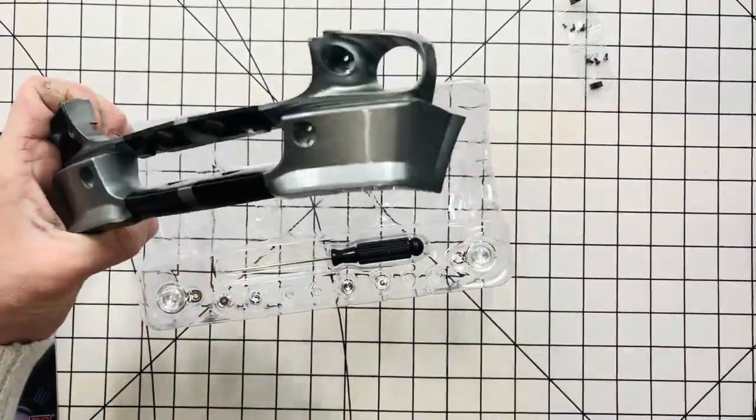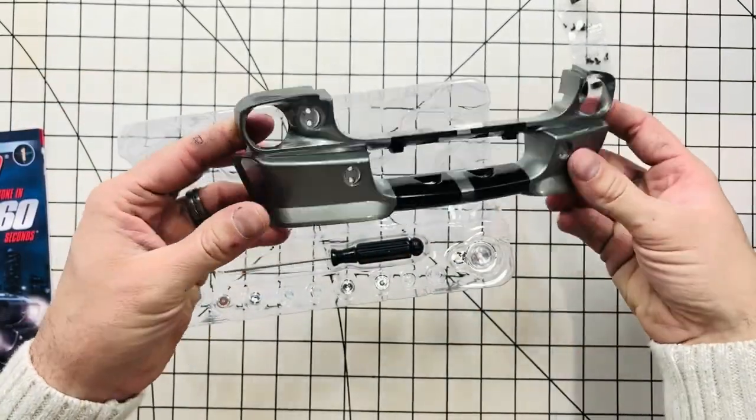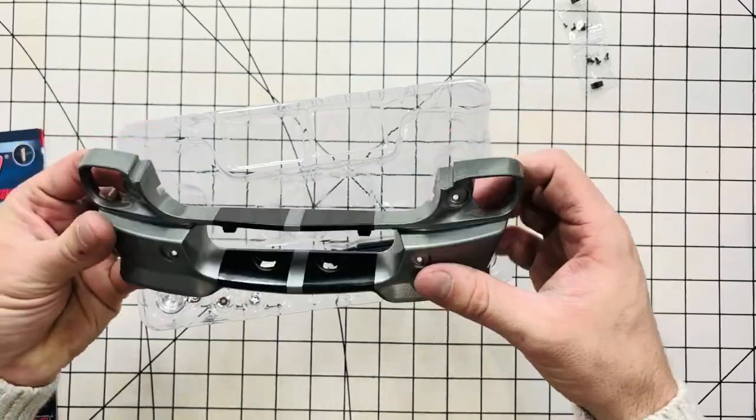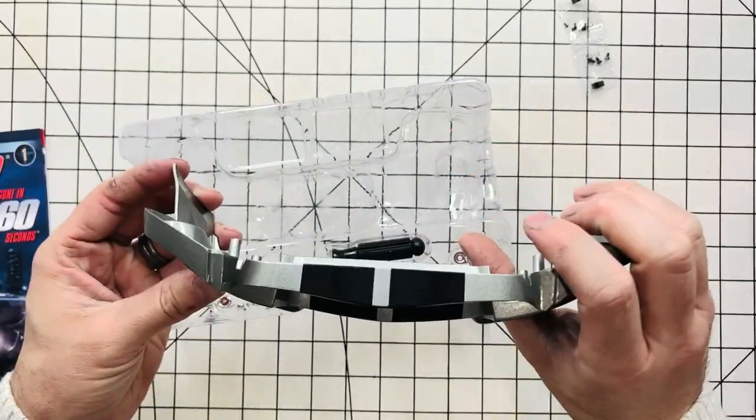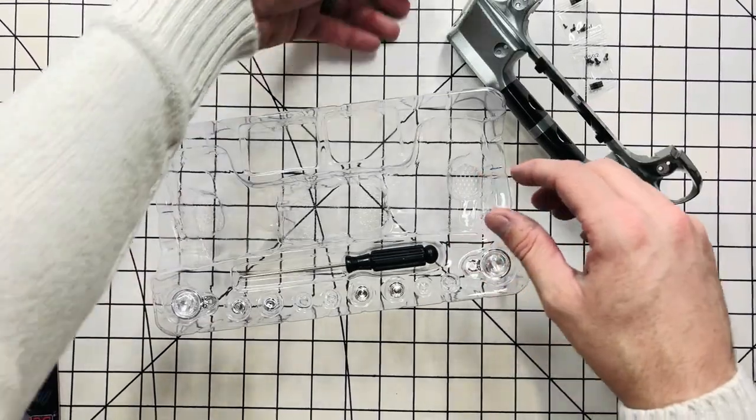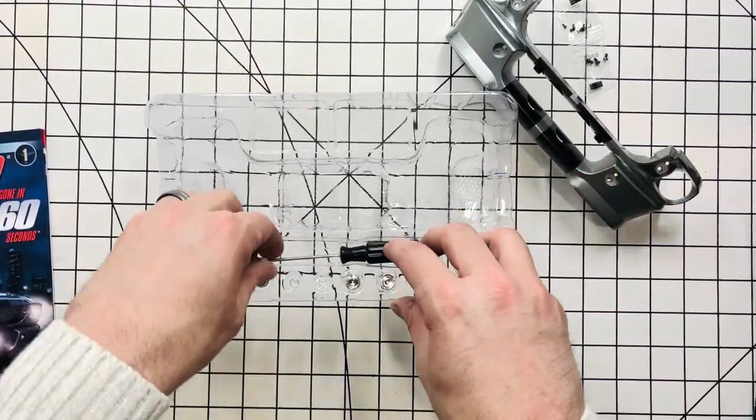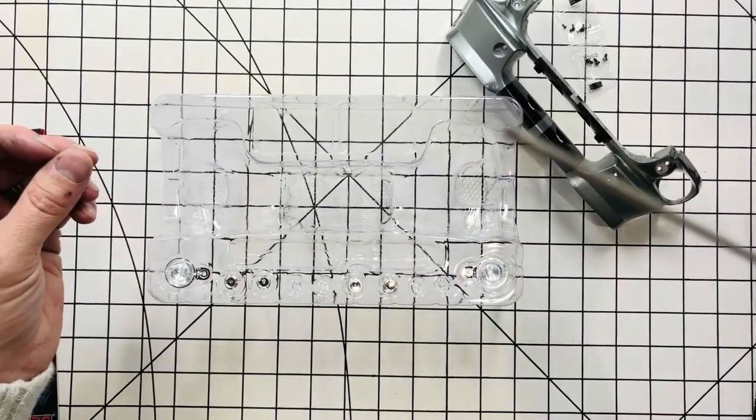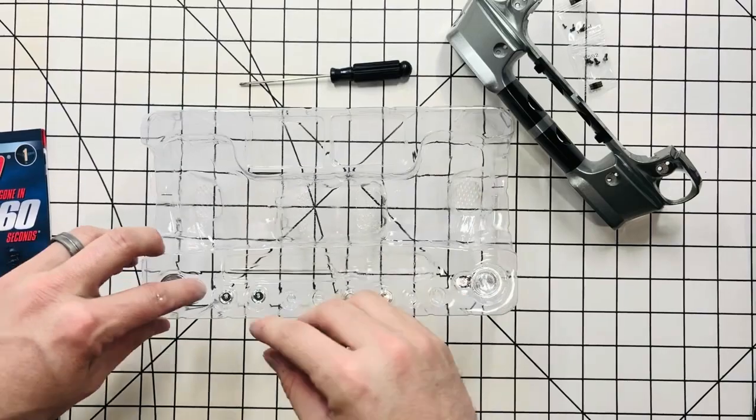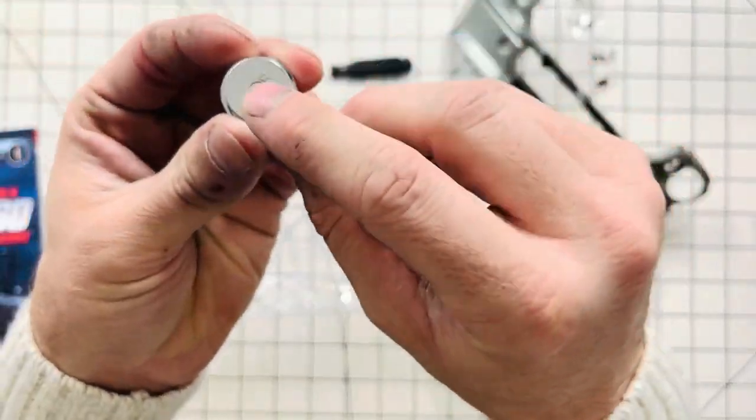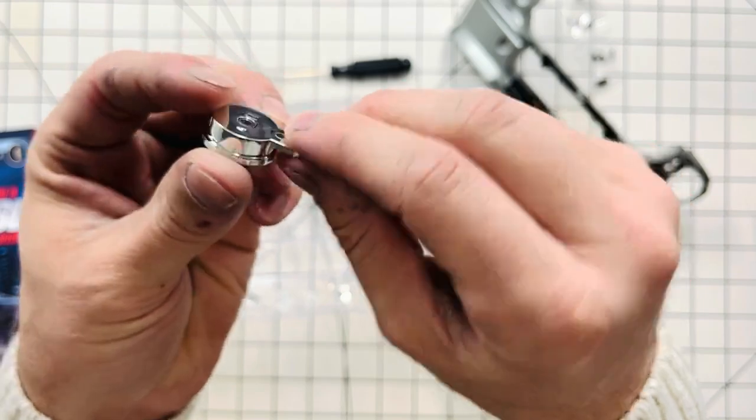The iconic front nose. Of course, a lot of people don't know this—this was created by Chip Foose. It comes with a little screwdriver and we have the headlights. These have functioning headlights, so the bulbs come in later.